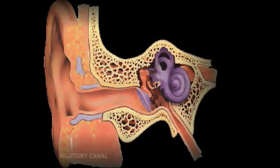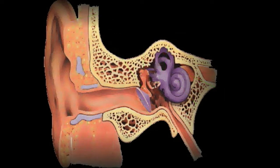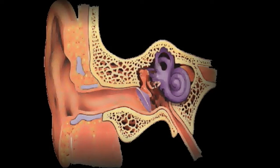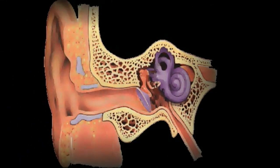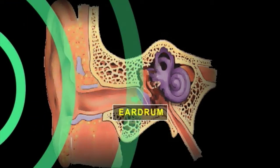The ear is comprised of several parts, each with a specific function. Hearing starts with the outer ear. When a sound is made outside the outer ear, the sound waves or vibrations travel down the ear canal and strike the eardrum. The eardrum vibrates.